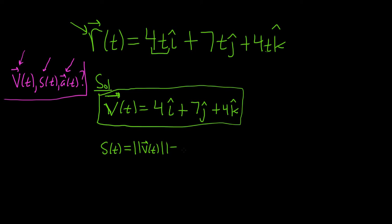And this is equal to the square root of each of the components squared. So it will be 4 squared, plus 7 squared, plus 4 squared. So this is equal to,